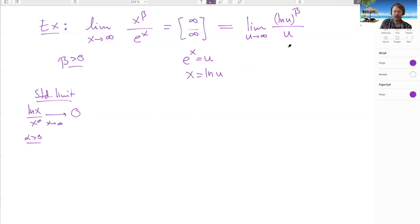Well then we can write this as lim u tends to infinity. Then we can pull out the beta like this, so we have our ln(u) here, then u to the 1 over beta like this.